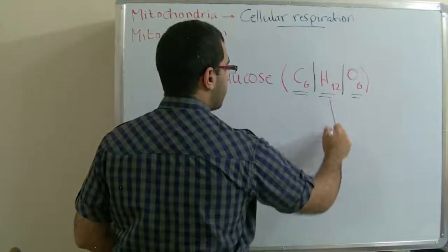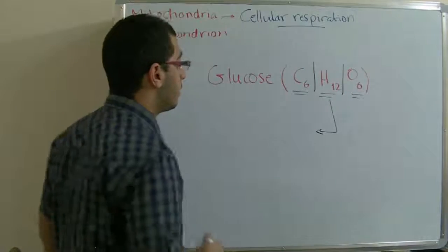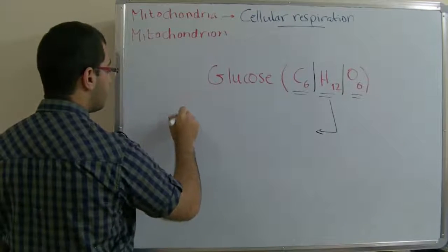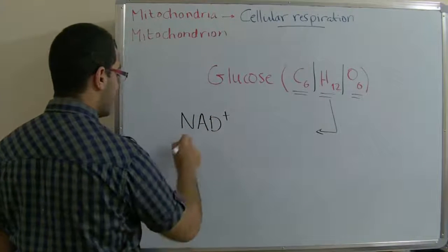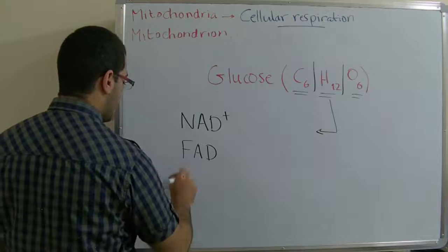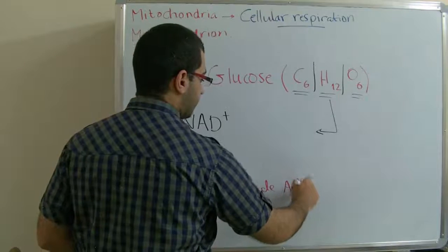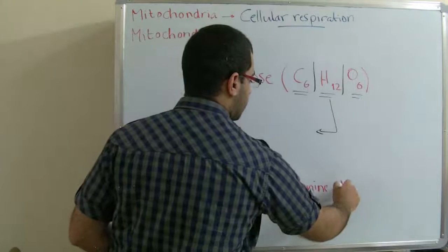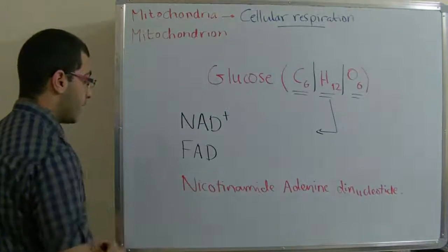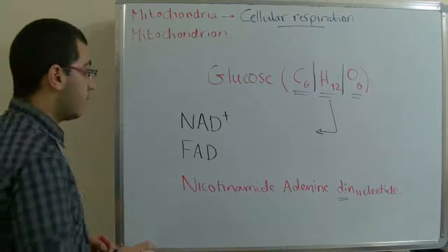The hydrogen here gets carried in order not to be lost, and it's used in the dark reactions in order to produce energy. There are two important hydrogen carriers, which are NAD+ and FAD. NAD is an abbreviation for nicotinamide adenine dinucleotide.